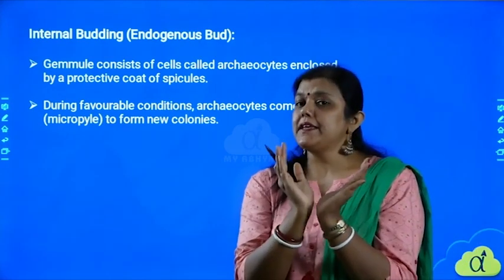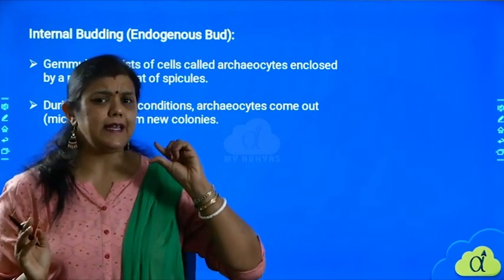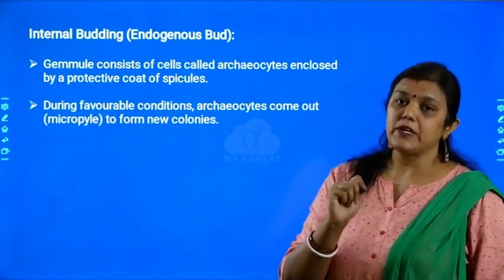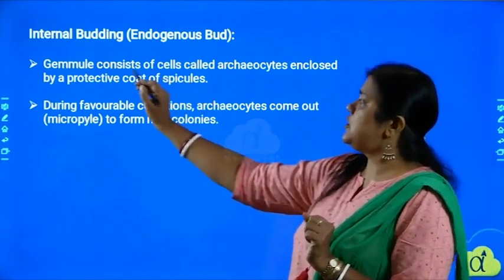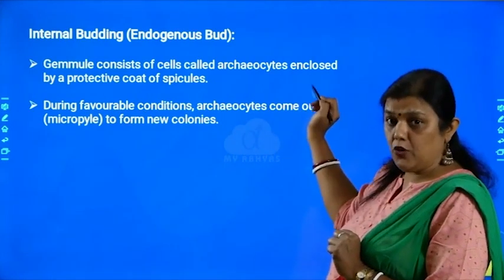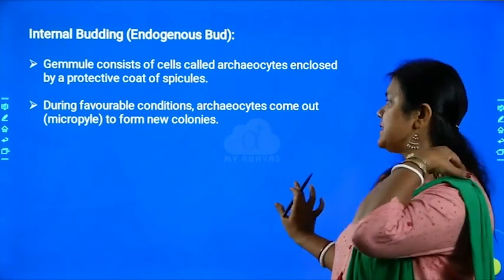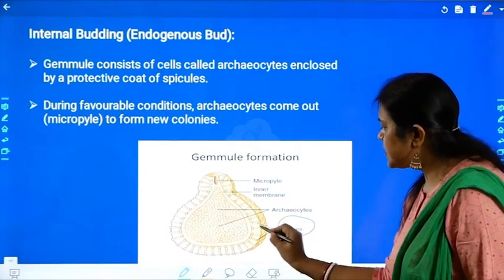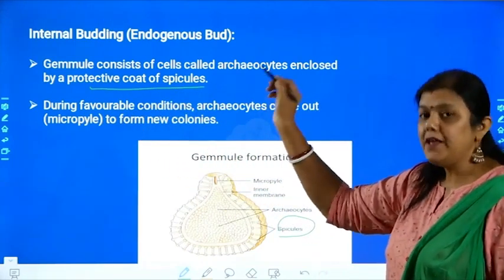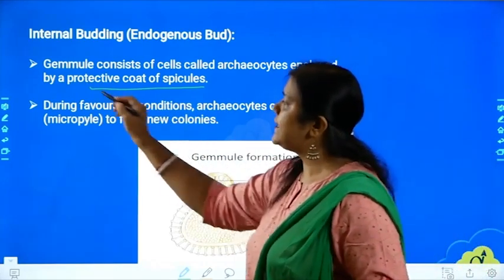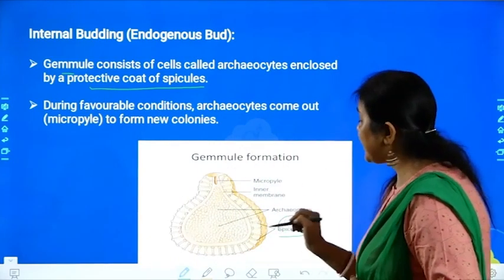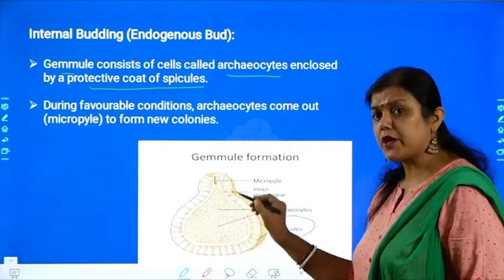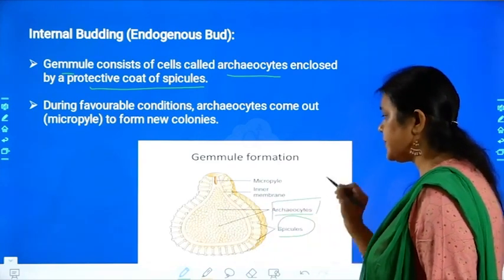Gemmules are those which form inside the organism — like a pitcher or pot-type appearance. When the organism wants to divide, there will be small tiny cells called archaeocytes. Here you can see these cells called archaeocytes; they are provided with a coating called spicules. So a gemmule consists of cells called archaeocytes enclosed by a protective coat of spicules. Looking at the diagram, the spicules are the protective coat around the gemmule, and inside the gemmule we have the archaeocytes.